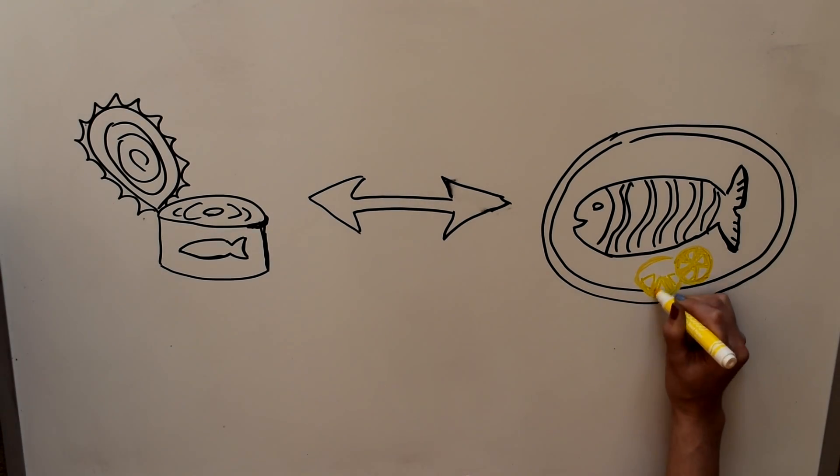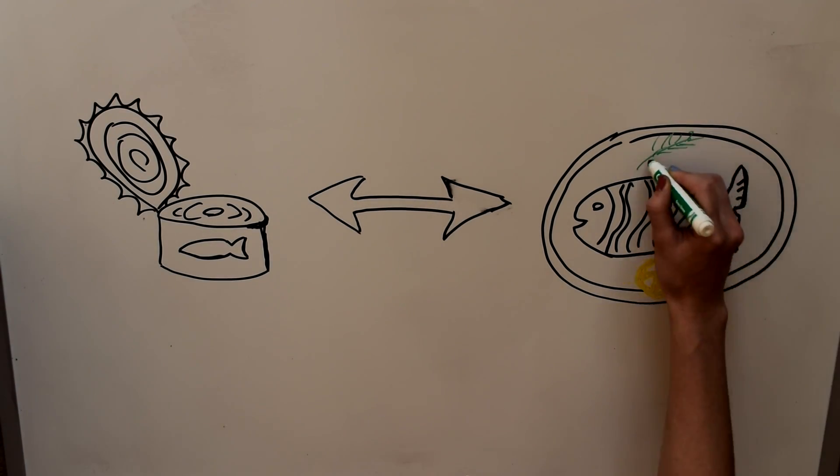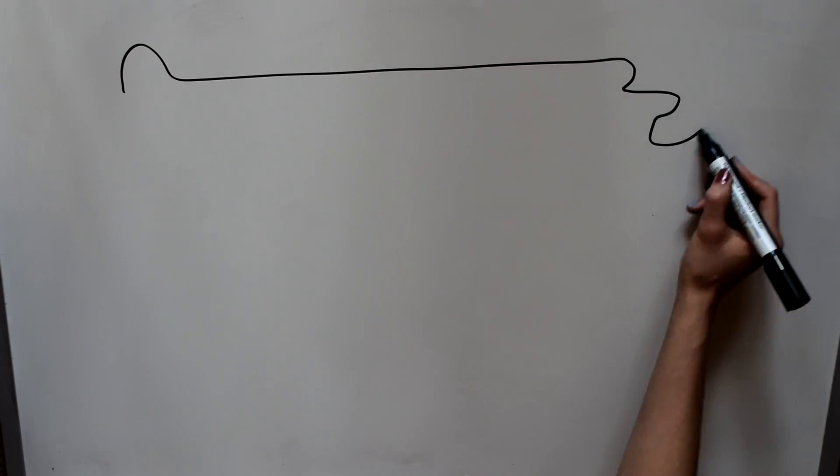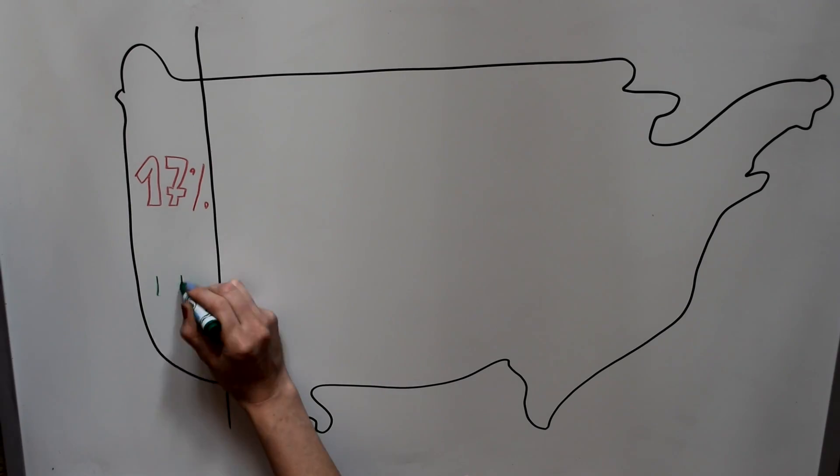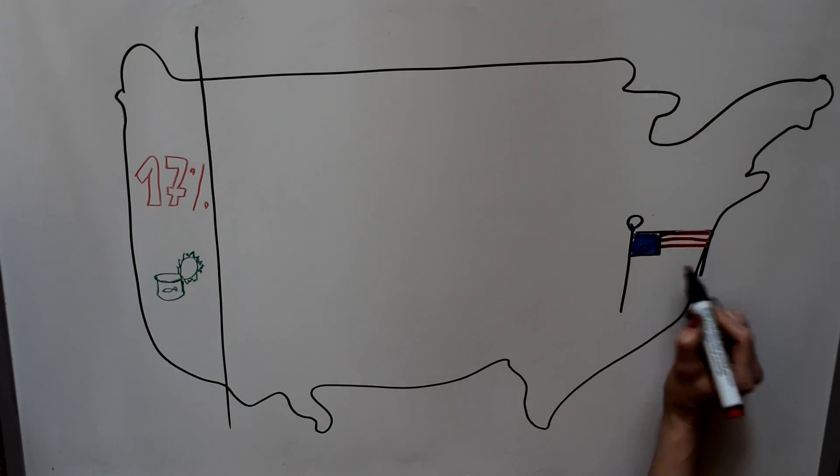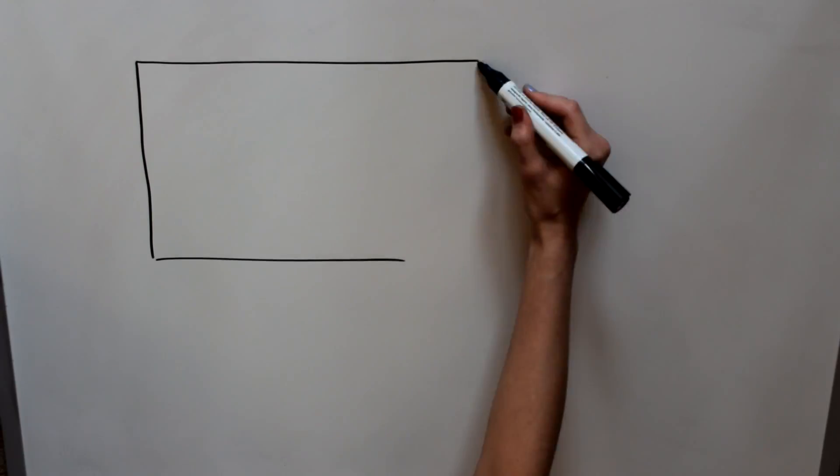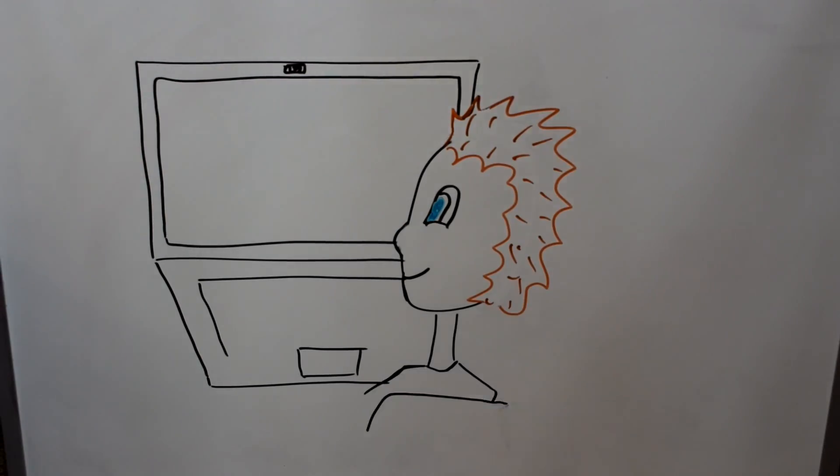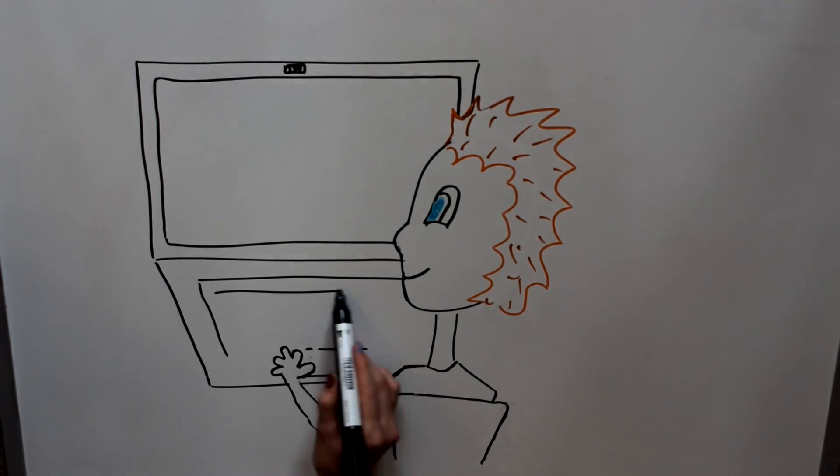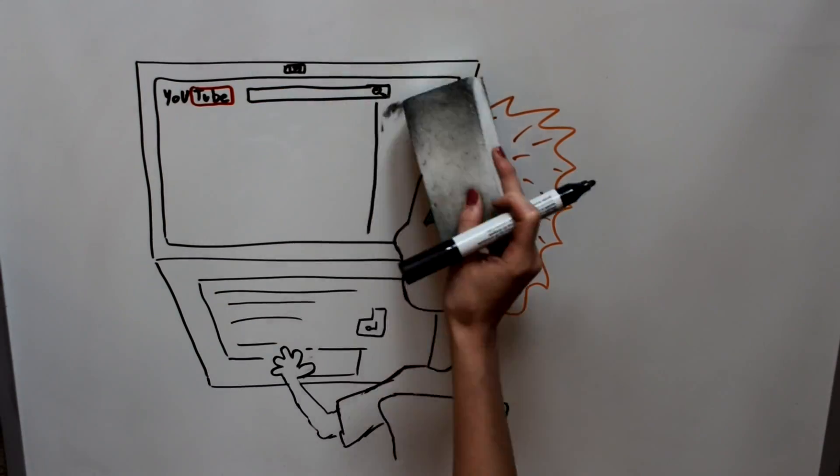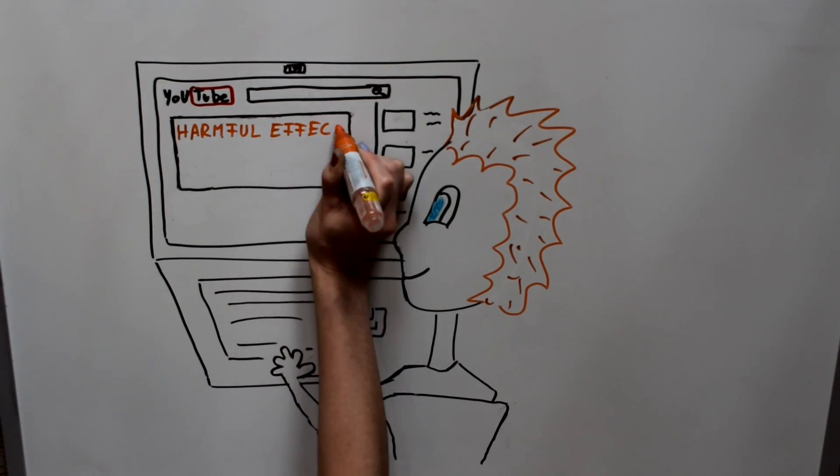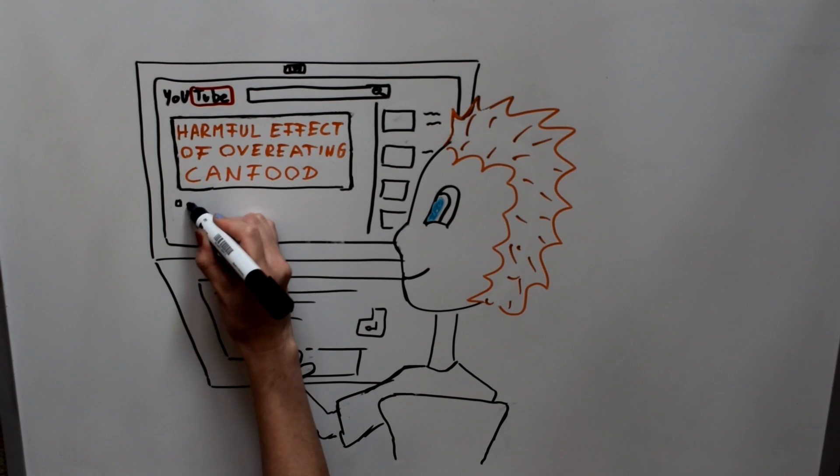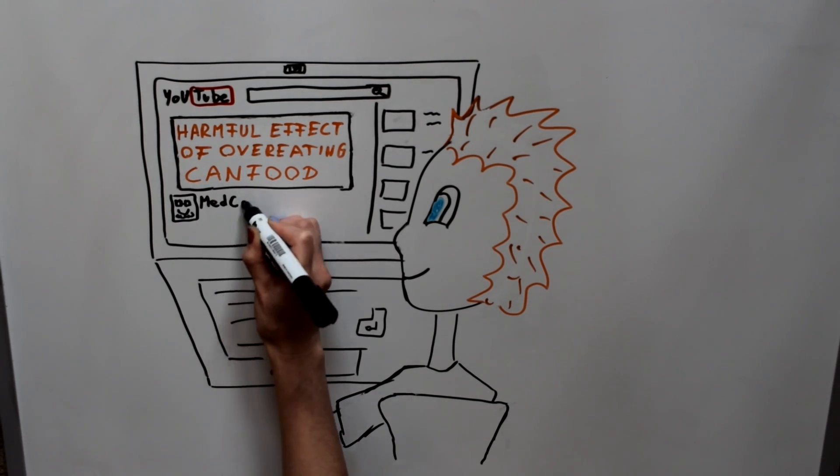Despite the majority of canned food eaters won't develop such chronic diseases, the risk is still there. It is unfortunate that 17% of the American diet today comes from canned food, but I strongly believe that educational videos such as the one you are watching now can provide for you the necessary information about the possible harmful effect of overeating canned food, and then it is up to you whether you want to continue eating them or stop.